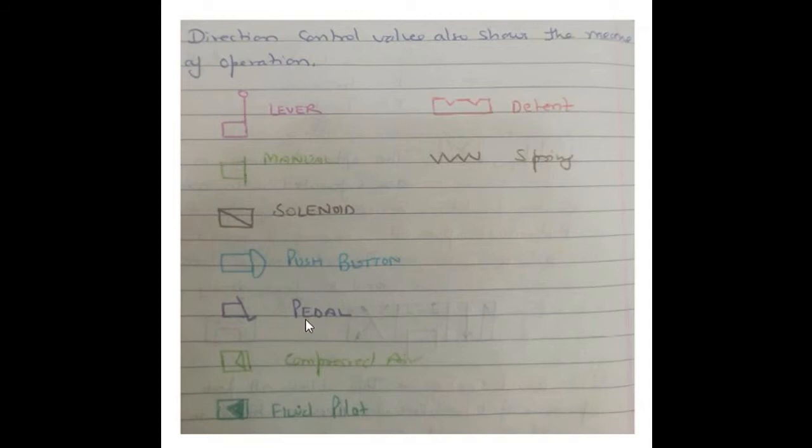DCV can be operated with compressed air, the symbol is shown here, and can be operated with pilot fluid. The symbol is this one.